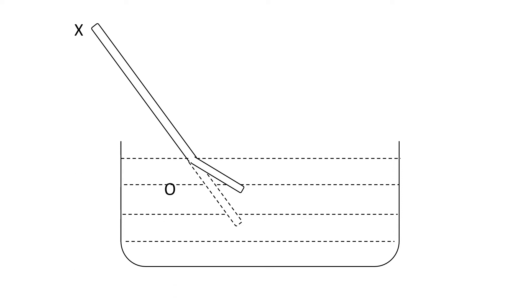Let's say the length of the stick is XOY, but it appears to be only XOY dash. What is the reason behind this?